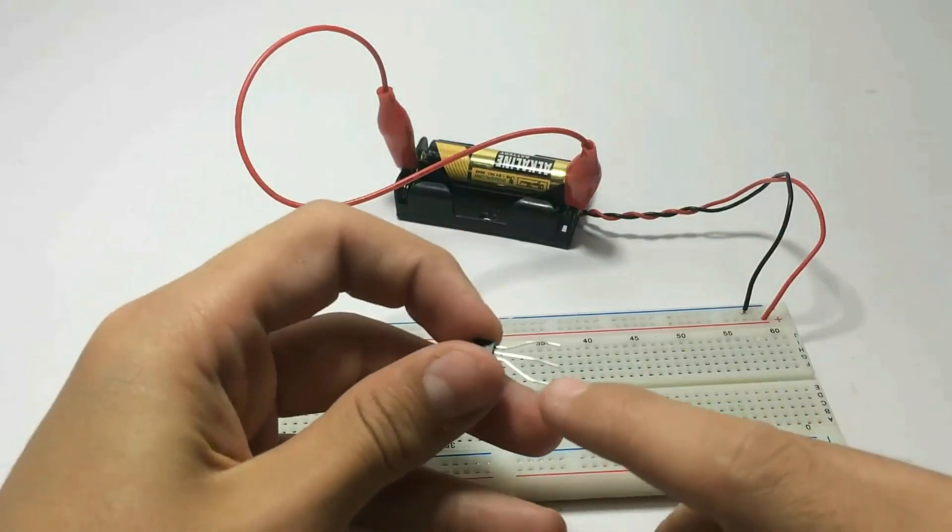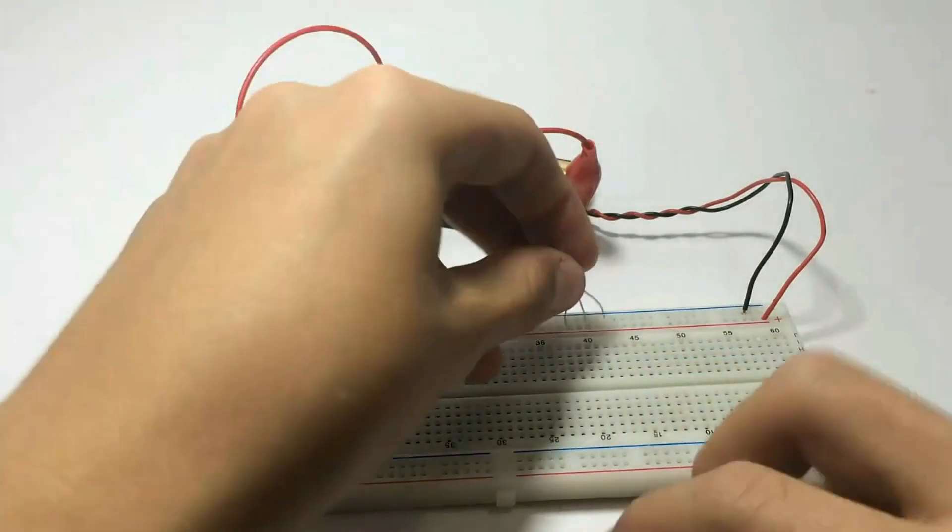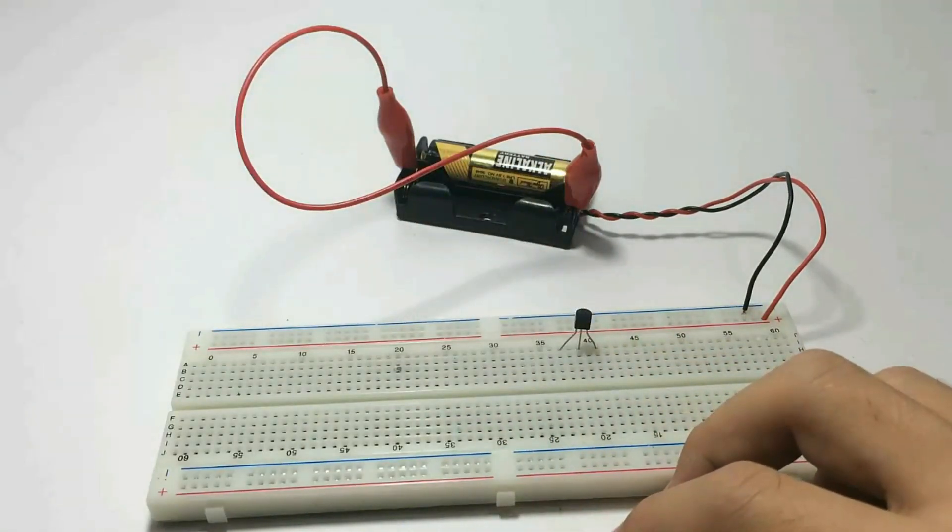Place it anywhere that you like. Connect the emitter to the negative side.